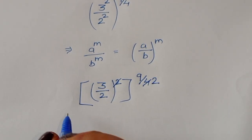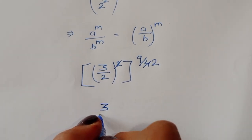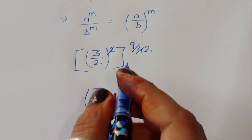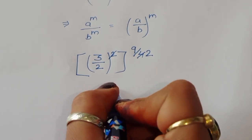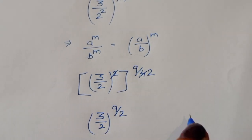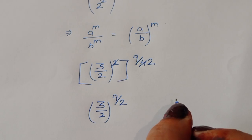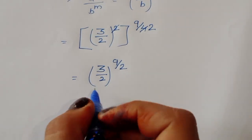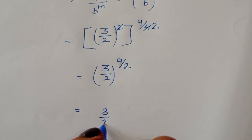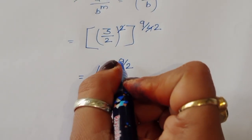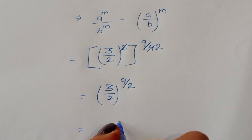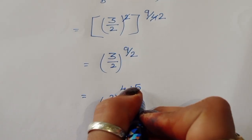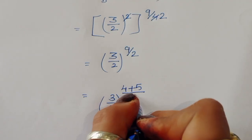Now we can cancel: 2 twos are 4. So we can write this as (3/2) to the power 9 upon 2. Now this is 9, so we can convert 9 into 4 plus 5 form — 4 plus 5 is 9 — divided by 2.